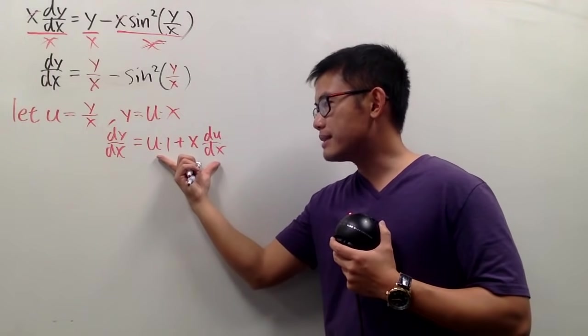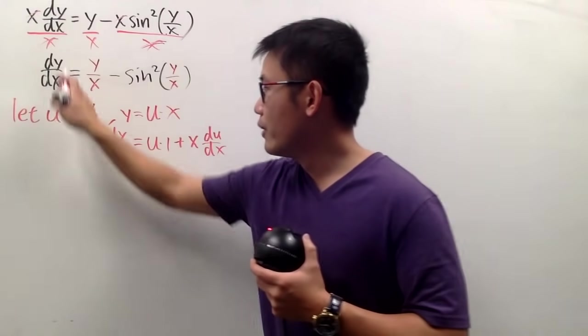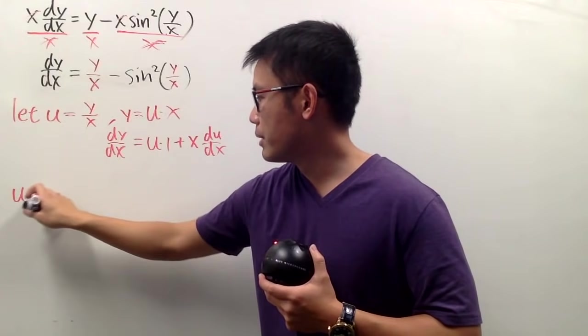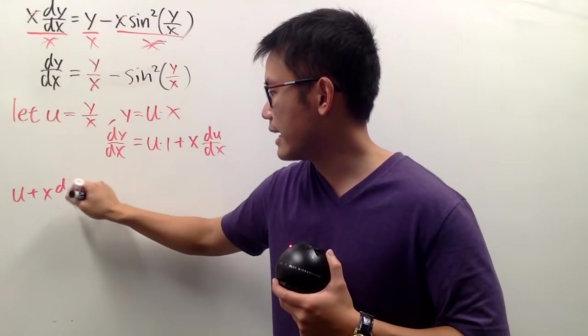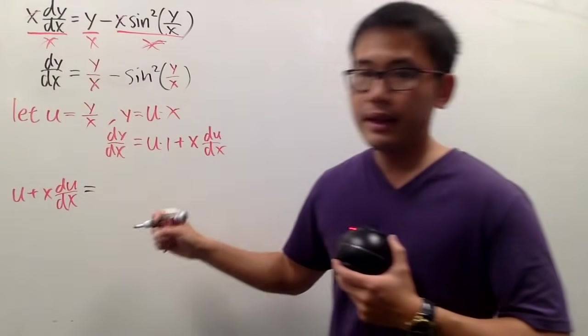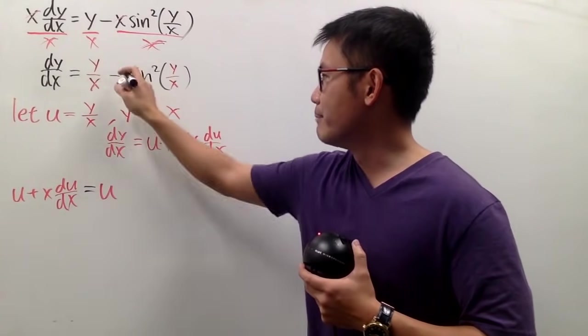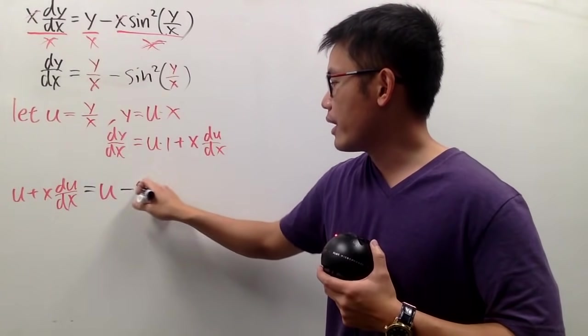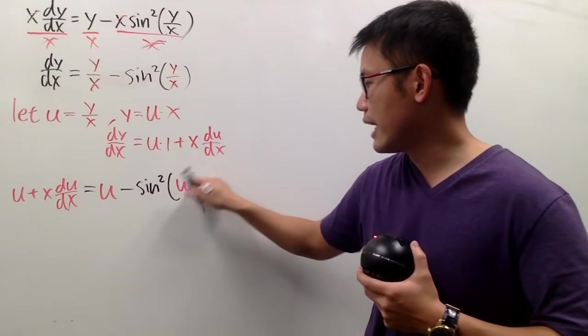And I will replace this right here for the dy dx. So, right here, we'll just have u plus x times du dx, like this. And that's equal to, on the right-hand side, y over x is just the u, and then minus sin squared, and then y over x is once again the u, like that.